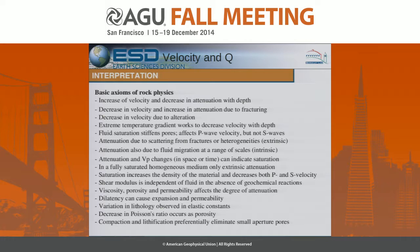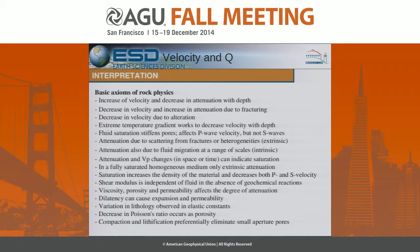Some things I want to point out: when we talk about attenuation of seismic energy — propagation of seismic waves through a medium — the loss of energy can be due to what we call intrinsic, which is the forcing of fluids to pass back and forth through permeable material, and extrinsic, which is energy loss by reflecting and refracting off small fractures. They're each sensitive to different things: one is sensitive to fracturing, the other to porosity and fluids.